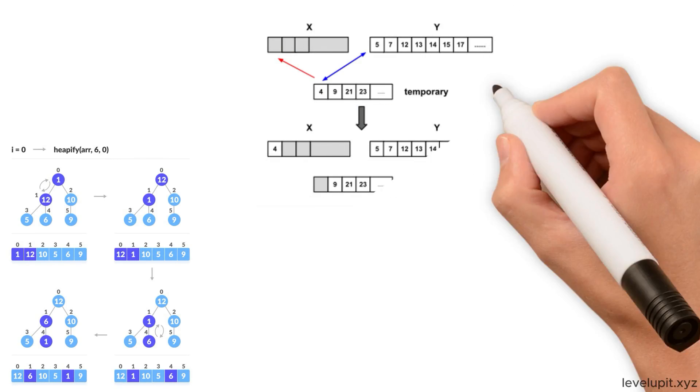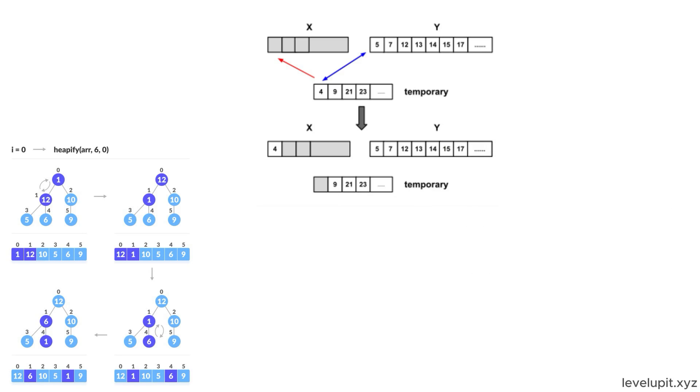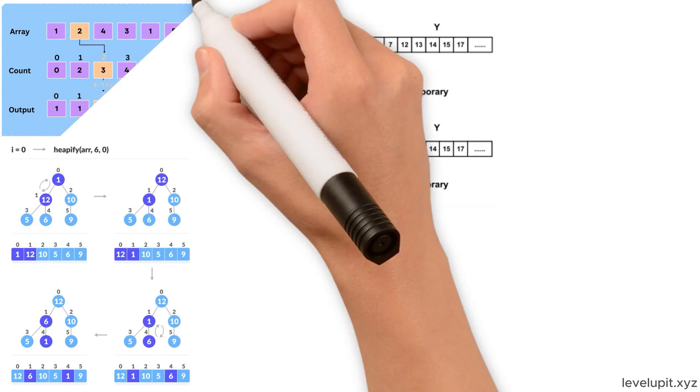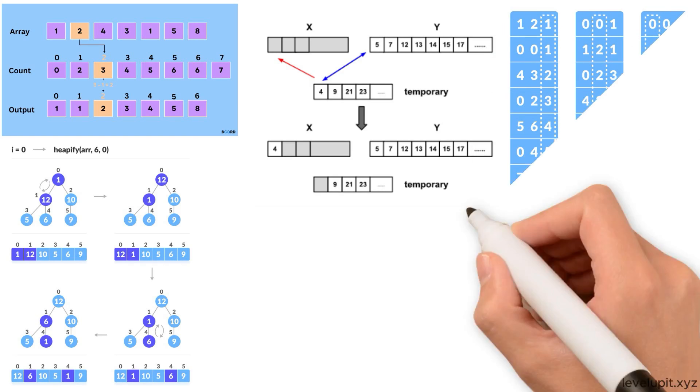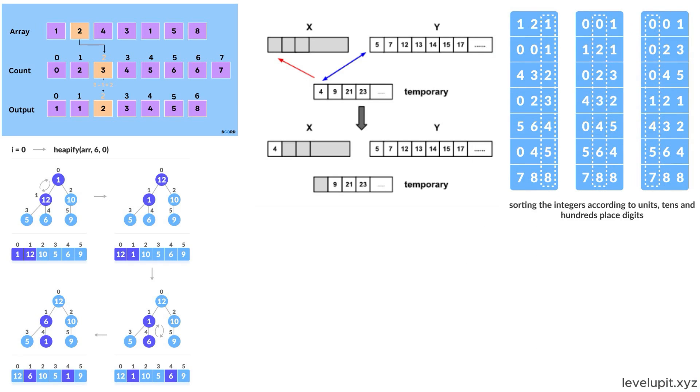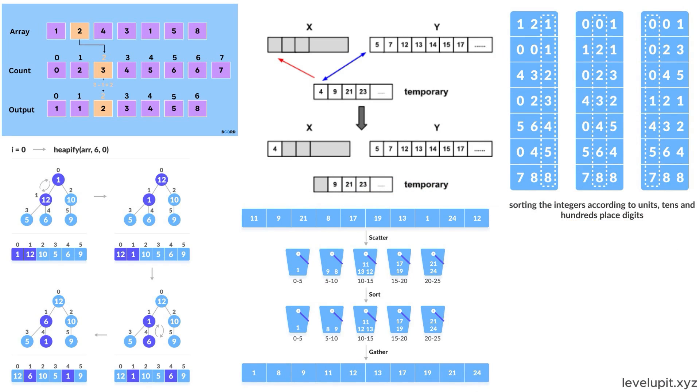TimSort looks for already sorted stretches and glides through real-world data. Counting sort tallies how many of each value there are and lays them out directly. Radix sort orders by digits from smallest place to largest, locking order step by step. Bucket sort pours numbers into labeled bins, sorts each little pile, and pours them back.